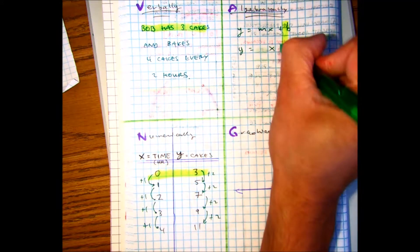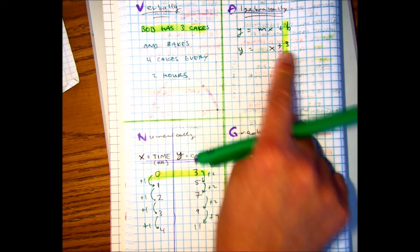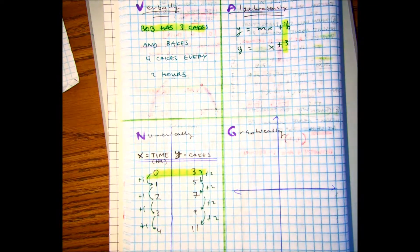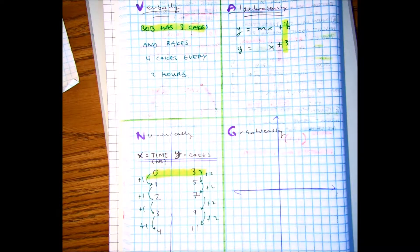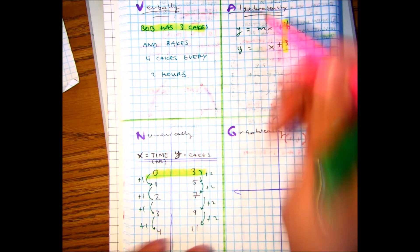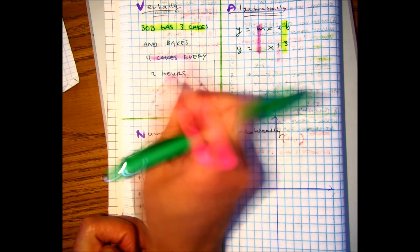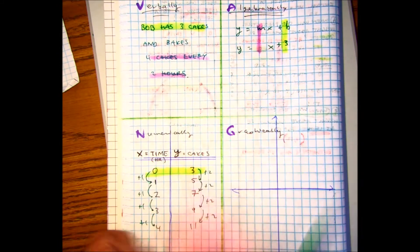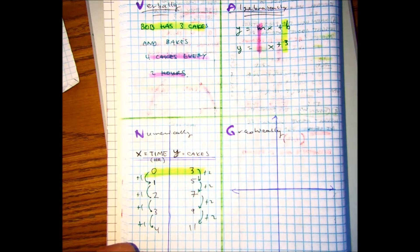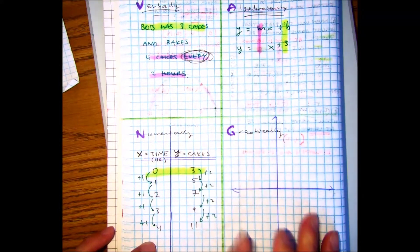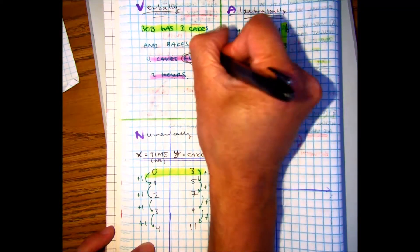The three there is our starting point. How about your slope? Your slope is four cakes for every two hours. Let's highlight this keyword. The word every can be written as what? Per.